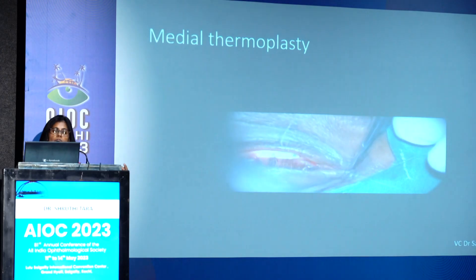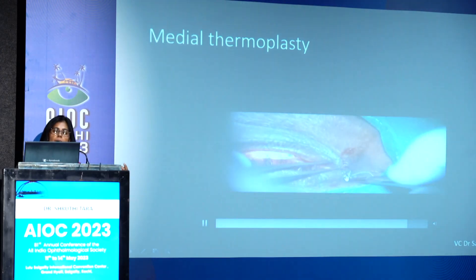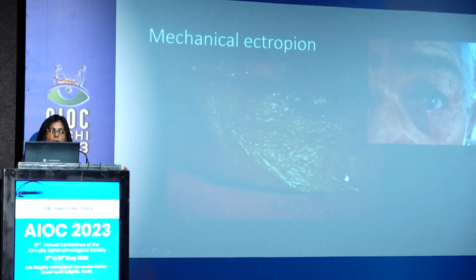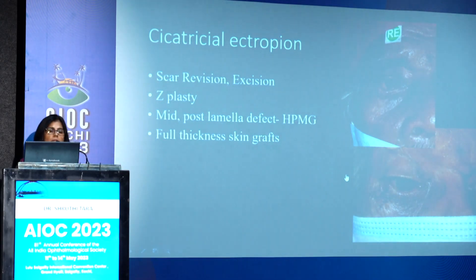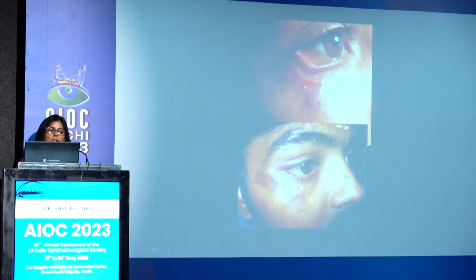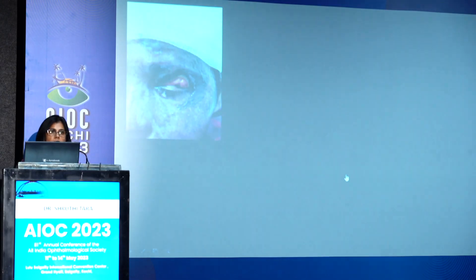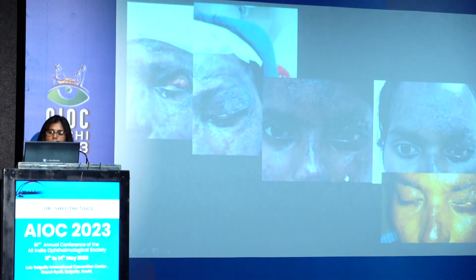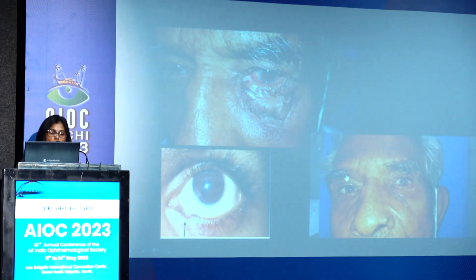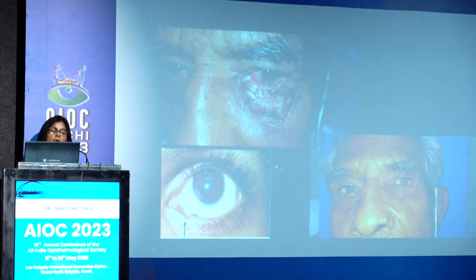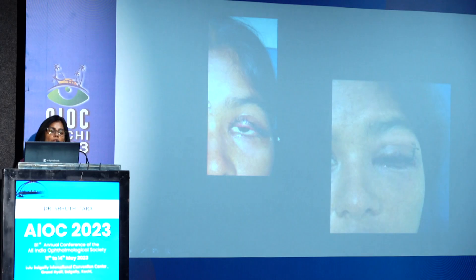Mechanical ectropion: remove the causative factor. Cicatricial ectropion: Z-plasty, bringing the upper lid flap onto the lower eyelid; sometimes 5-FU injection gives good results; for bad scars, couple with grafts for reasonably good results. A notch-like deformity can be counteracted with a mini monocanalicular stent plus thermoplasty suture for counter traction. For neurofibromatosis repair with ectropion, shortening the posterior lamella can correct the lagophthalmos.